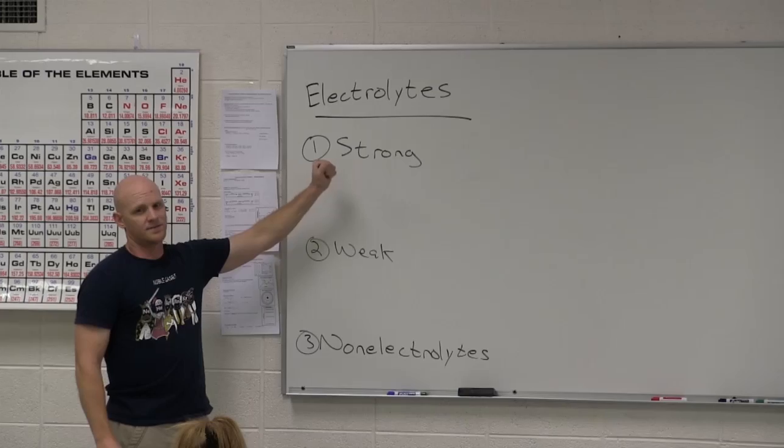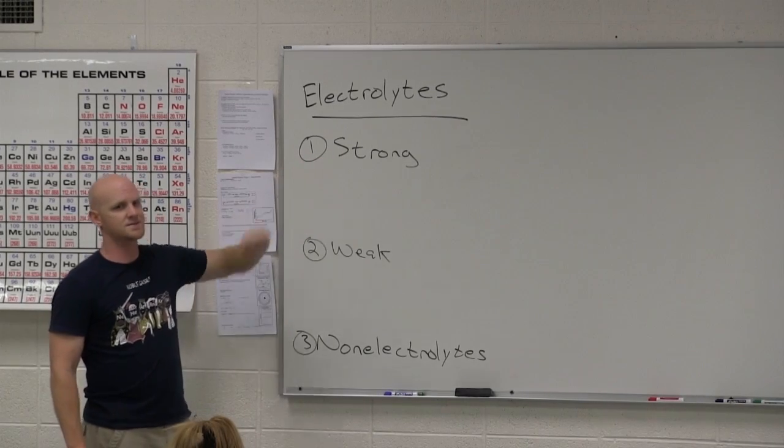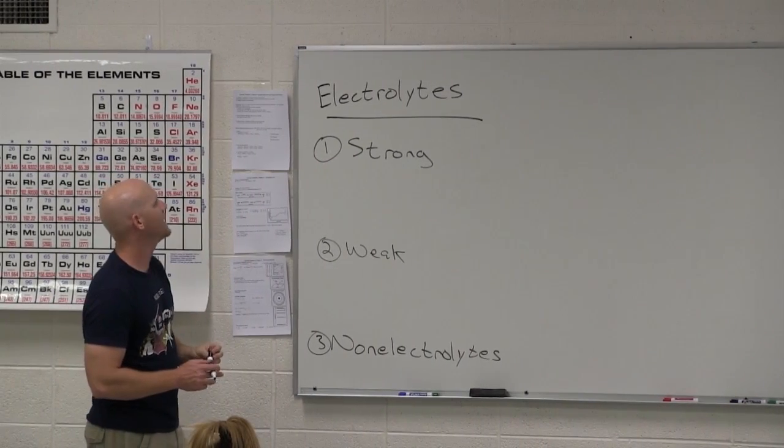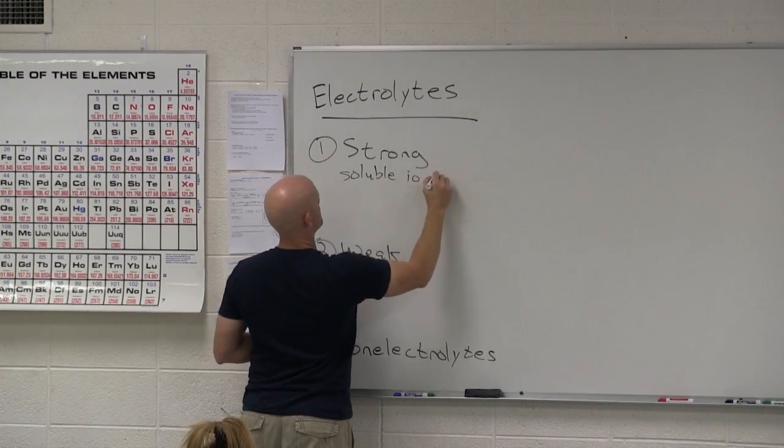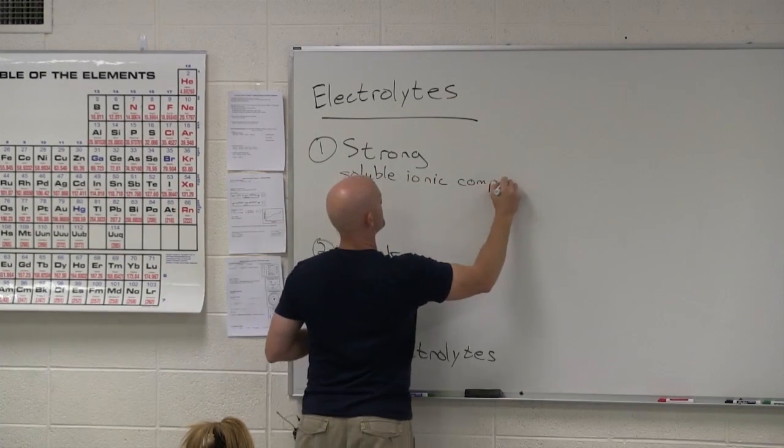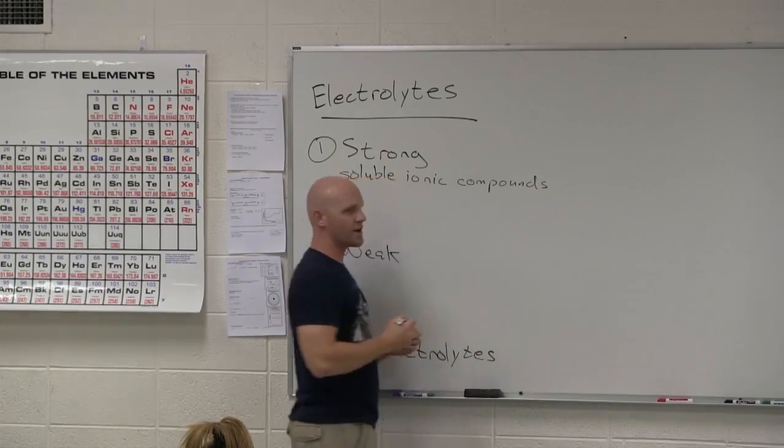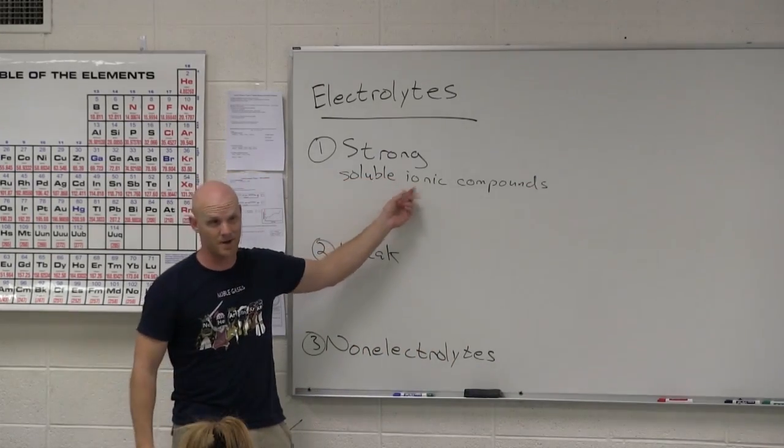So your strong electrolytes, usually going to be one of three things. And these are kind of highlighted on your handout there with bullet points. So in the first are soluble ionic compounds. How do you know if an ionic compound is soluble? First of all, how do you know if you have an ionic compound period?